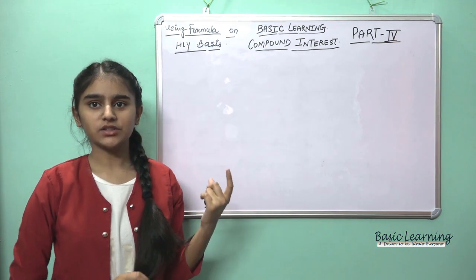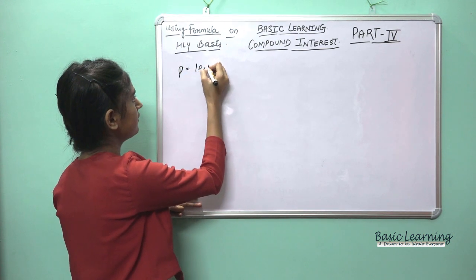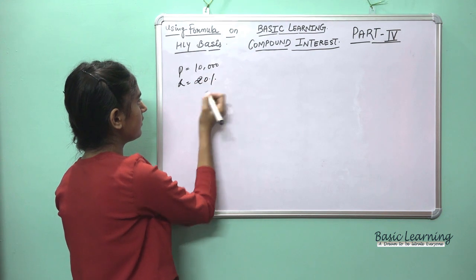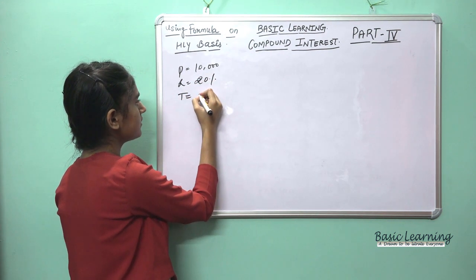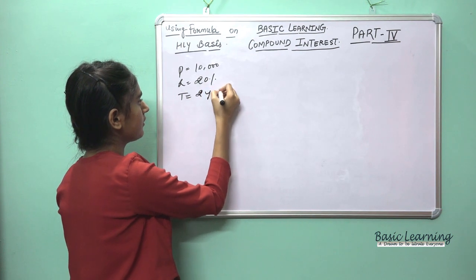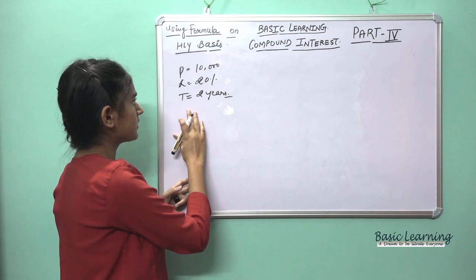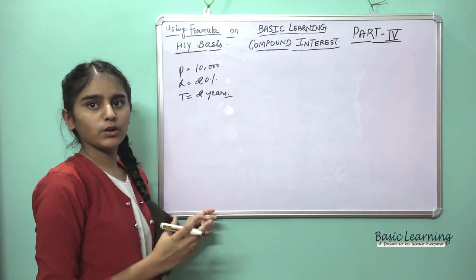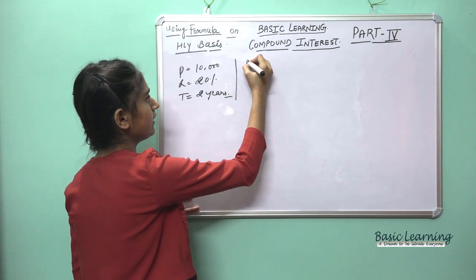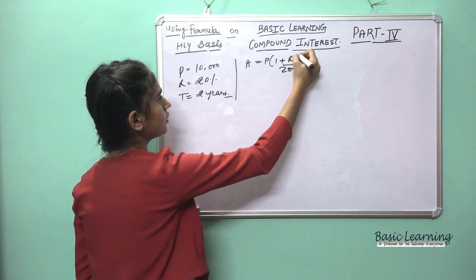Now I will take another question. Suppose the principal is Rs. 10,000, the rate is 20%, and the time duration is 2 years. The formula we apply on a half-yearly basis is A = P(1 + R/200)^2n.